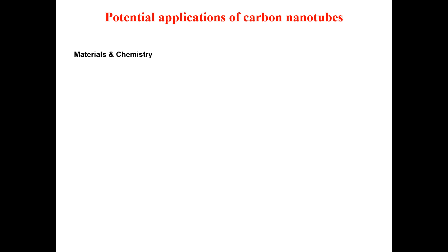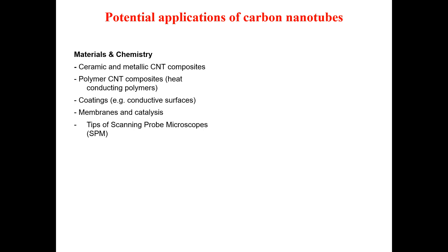Potential applications of carbon nanotubes include many different fields. In materials and chemistry, you can utilize CNTs as composites, ceramics, and metallic substances. If you need a heat-conducting polymer, it can be utilized in the form of a CNT composite. You can use CNTs as conductive coatings, as membranes, and in catalysis.